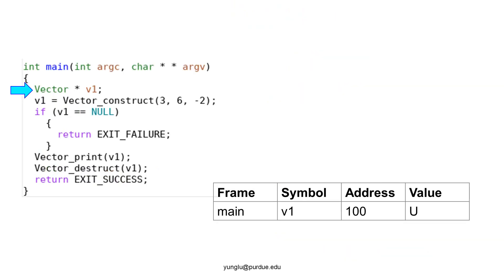This slide shows how to use the constructor and the destructor. In the main function, it creates a pointer called v1. The constructor returns the allocated memory and assigns the address to v1. The constructor also assigns values to the attributes. The print function can print the attributes of v1. Before the program ends, the main function calls the destructor to free the memory. Let's take a closer look and understand what happens to the stack and heap memory when the main function calls the constructor.